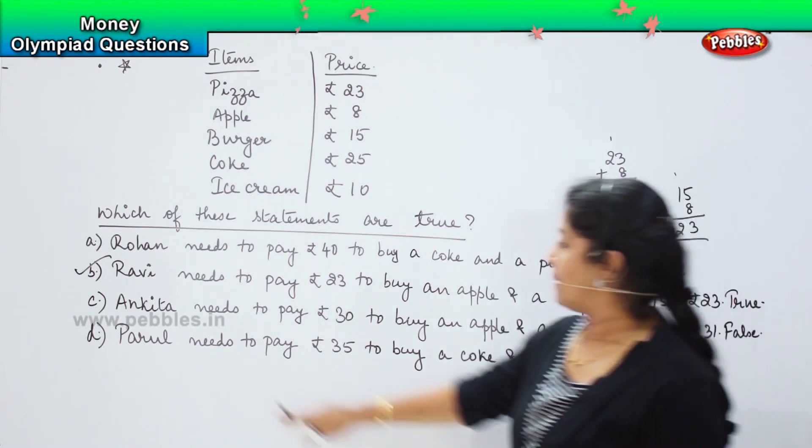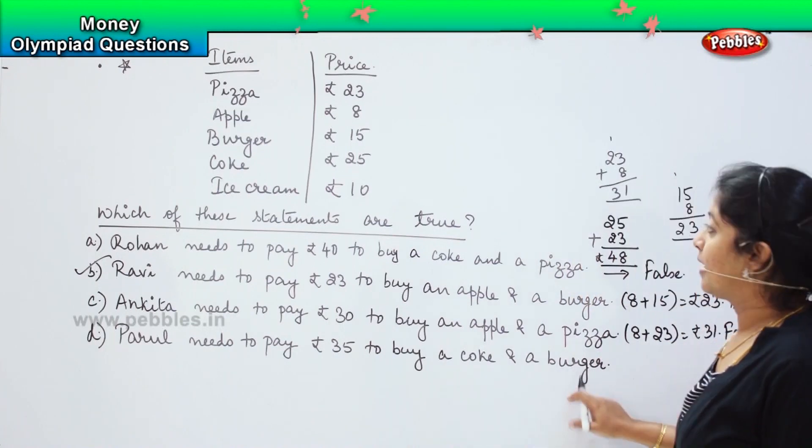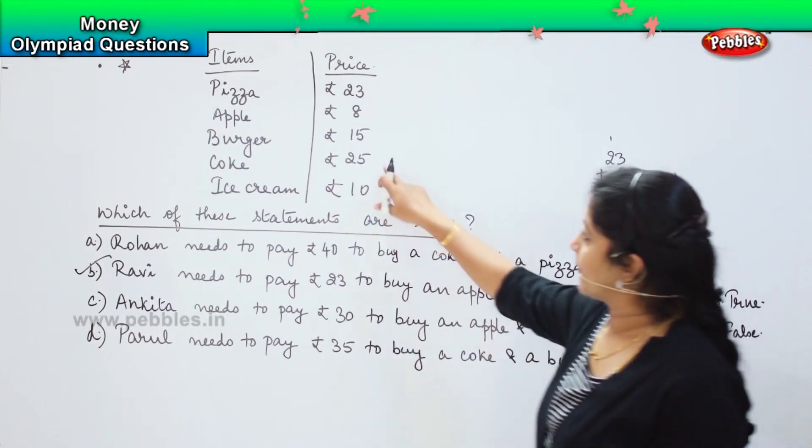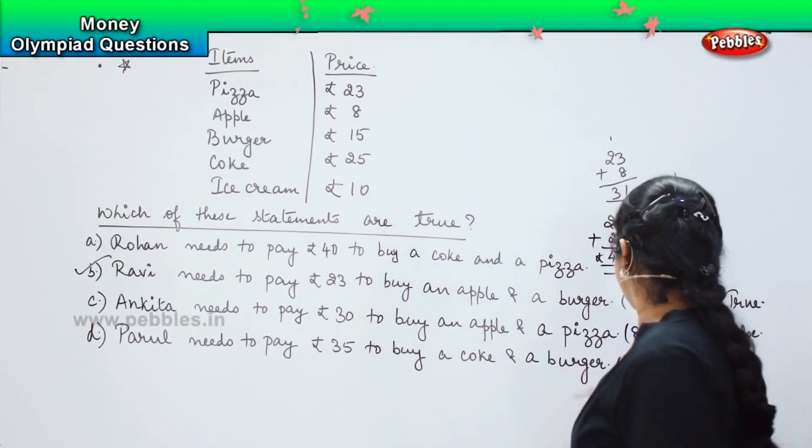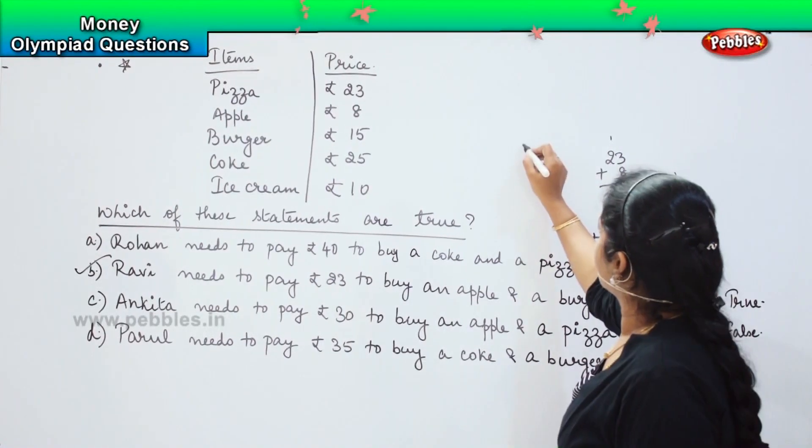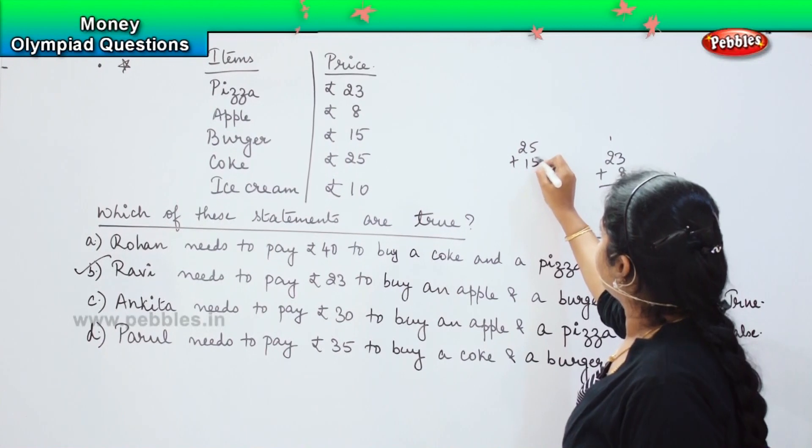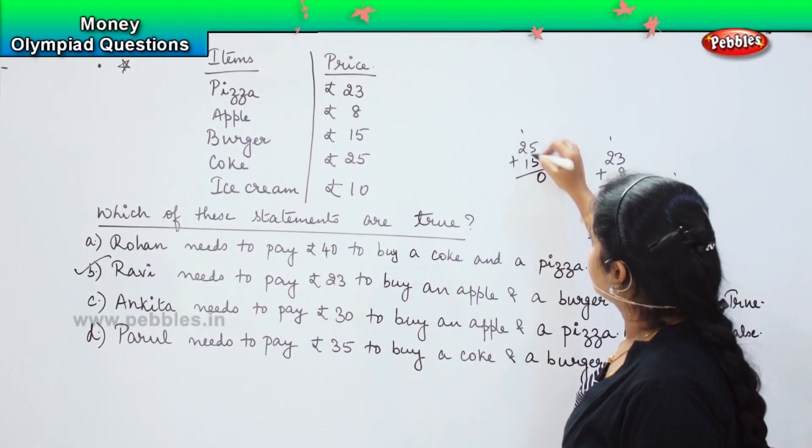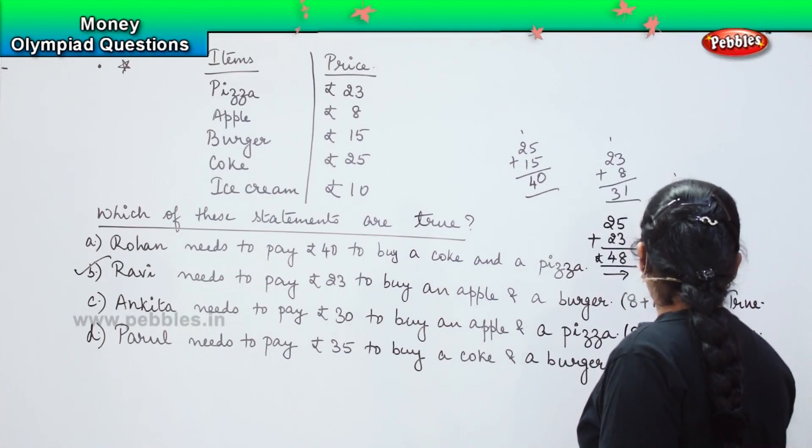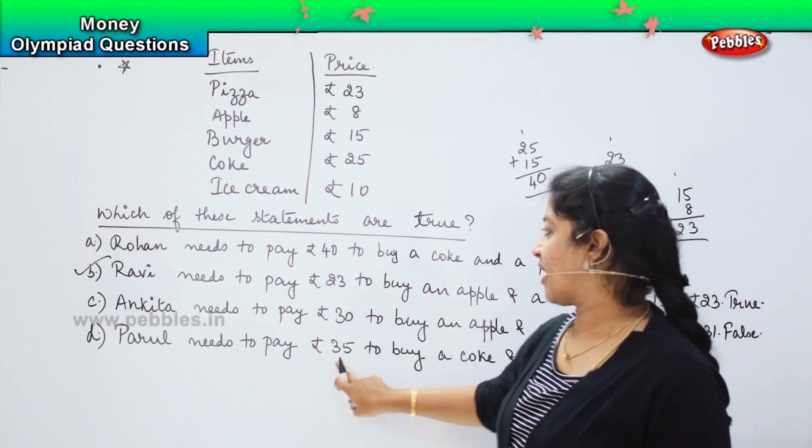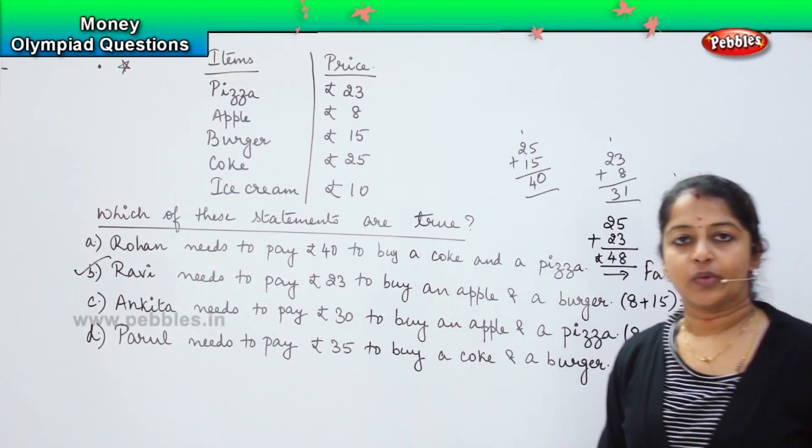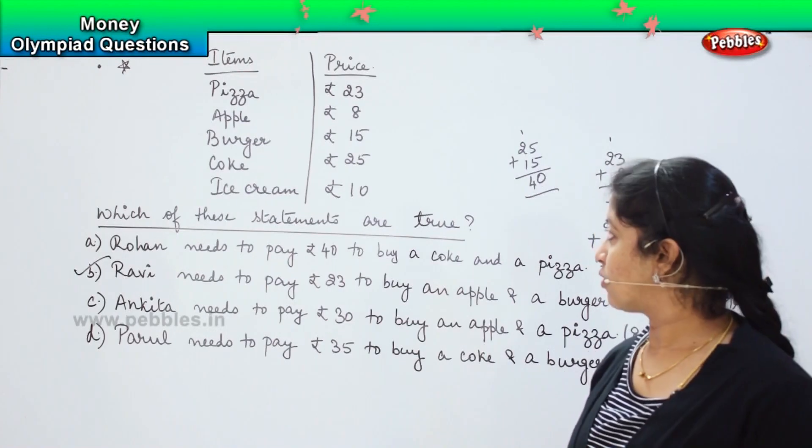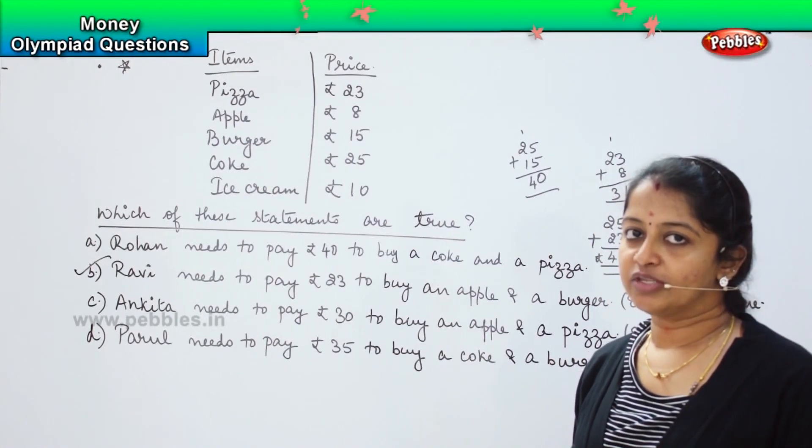Coming to the last one. Parul needs to pay 35 rupees to buy a coke and a burger. So, what is the cost of a coke? It is 25. And what is the cost of the burger? It is 15, right. So, 25 plus 15. 5 plus 5 is 10, 1 plus 2 is 3, 3 plus 1 is 4. So, which means she has to give me 40 rupees. And she is having 35 rupees with her. So, again, this is a false statement. So, option B is only the right statement. Did you understand how to solve these type of problems? Shall we move to the next question?